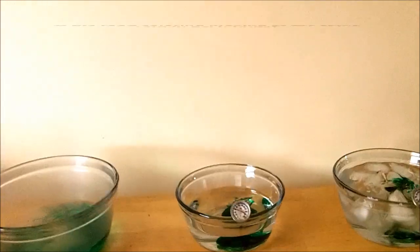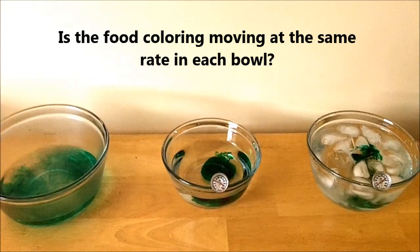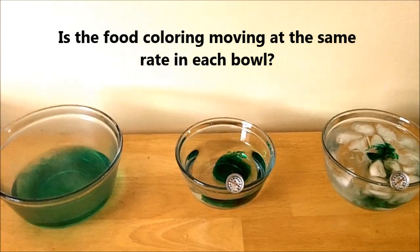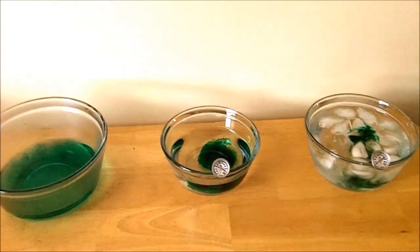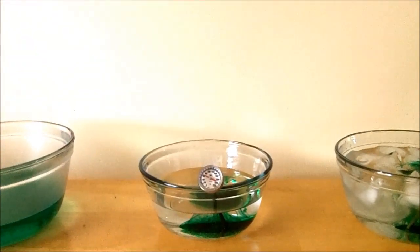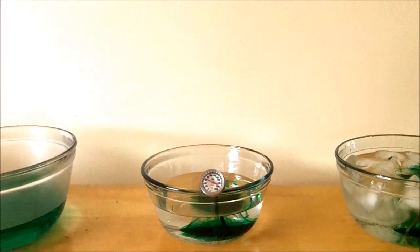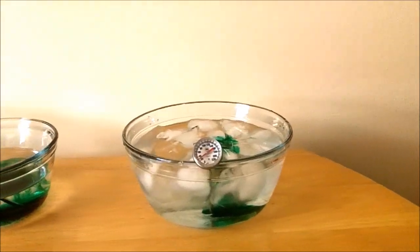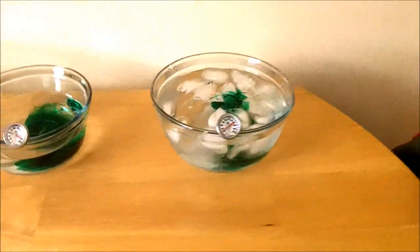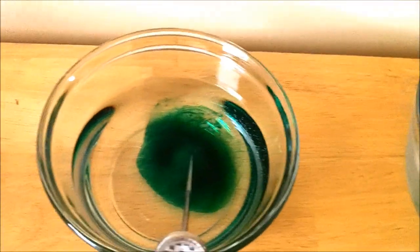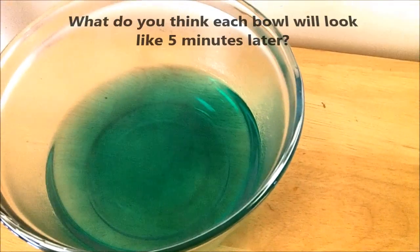Let's move a little closer. The bowl with the boiling water is almost now completely green. The bowl with the room temperature water, about 60 degrees, is spreading out a little bit. And the bowl with the ice water is not spreading out much at all — maybe spreading out some, but not much.